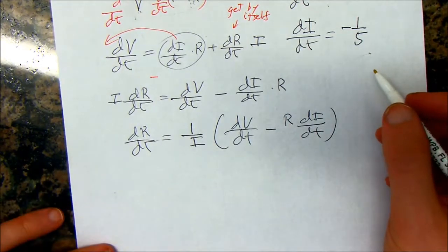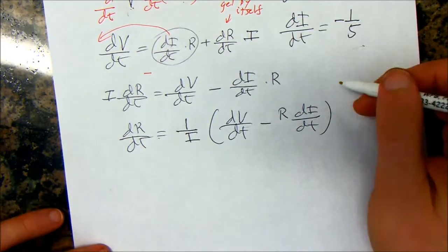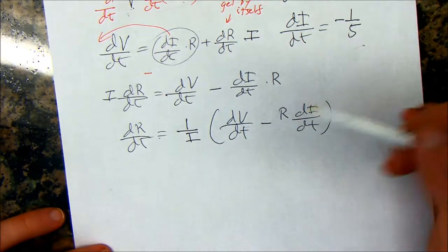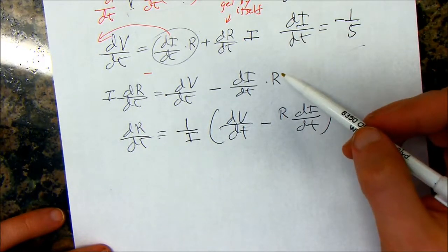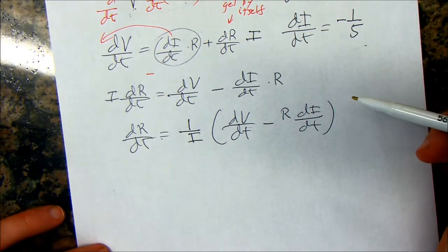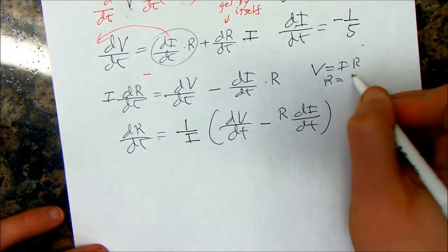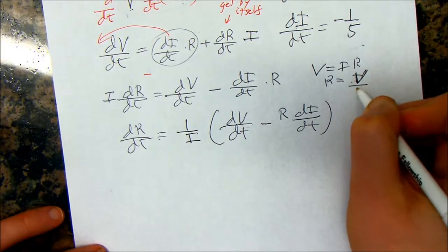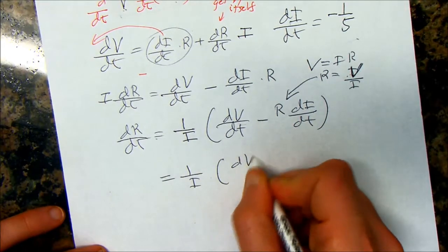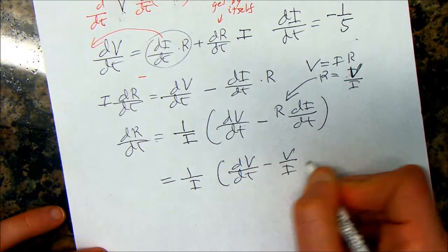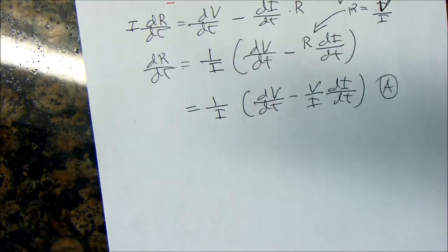Now, this gets, they're being a little bit mean again in this problem. Because, this doesn't look like any answers. So, what did they do? Well, they're trying to set you up for the fact that you only have V and I in the next part of the problem. So, you have to realize that since V is equal to IR, then R is equal to V over I. So, if I put that there, then I have what they have. 1 over I times dV/dt minus V over I times dI/dt. For me, that was A. How mean of them?